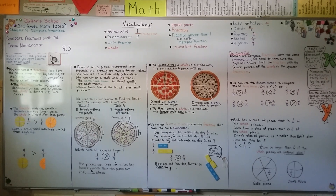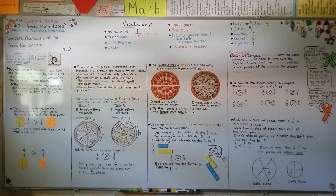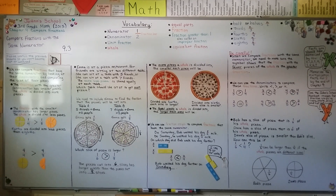So, we can compare fractions with the same numerator — that same top number — by looking at the denominator. Whichever denominator is a lower number is the greater fraction. Be careful when comparing fractions to make sure you're comparing the same size whole. You don't want to compare two different size pizzas. I'm really proud of you for watching these math videos. I hope you're doing well, and I'll see you next time. Bye!